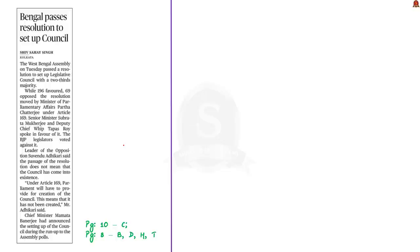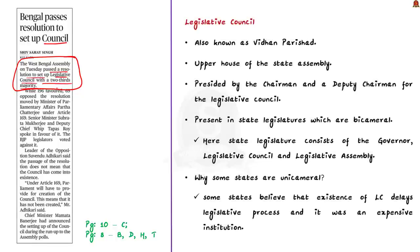Bengal passes a resolution to set up a council. This news article mentions that the West Bengal Assembly has passed a resolution to set up a legislative council in its state. In this context, let us learn certain information about the legislative council from an exam perspective. The legislative council is also known as the Vidhan Parishad. This legislative council is the upper house of the state assembly, like how the Rajya Sabha is the upper house of the Parliament. The legislative council is presided by the chairman and deputy chairman elected by its members.